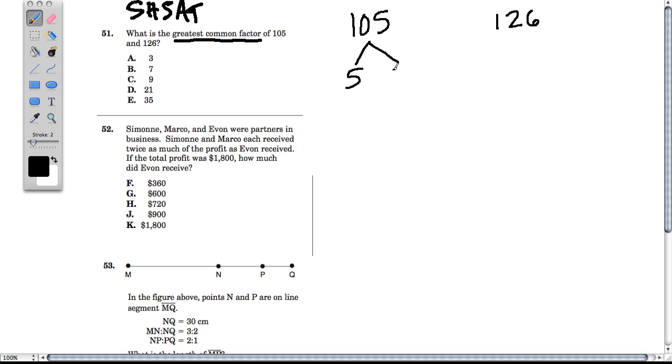105 is a multiple of 5 times 21. 21 is 7 times 3. We keep following these factor trees until we get to the prime numbers. 5, 7, 3 are all prime.